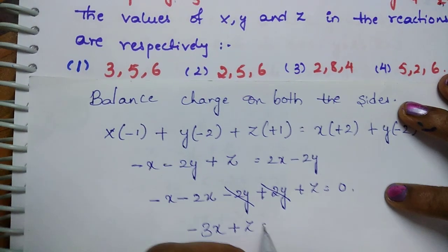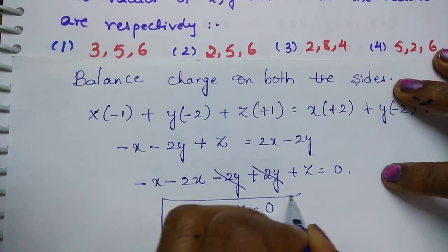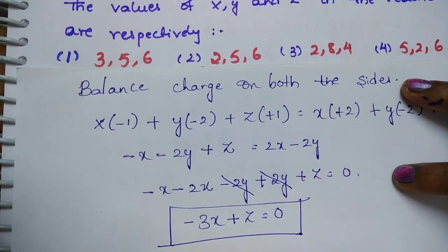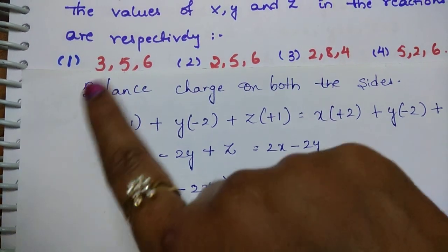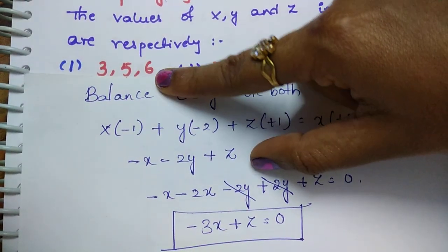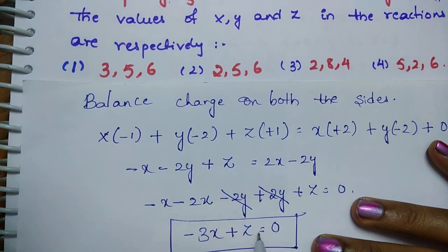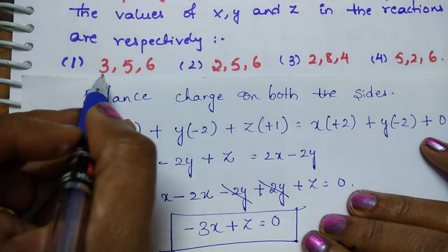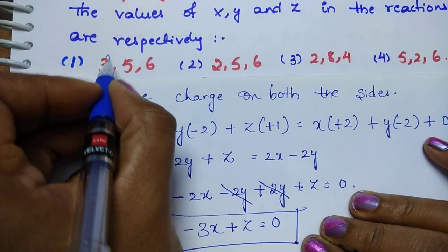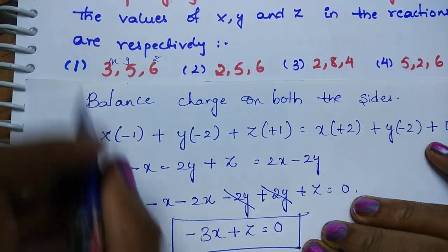See, this is x, y, z, right? Students, see the x value is 3, so -3 times 3 plus z value is 6, is equal to 0?